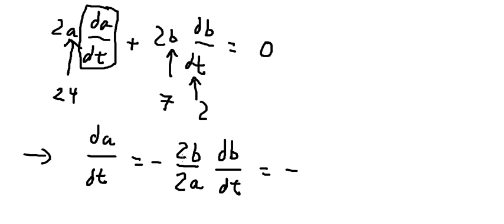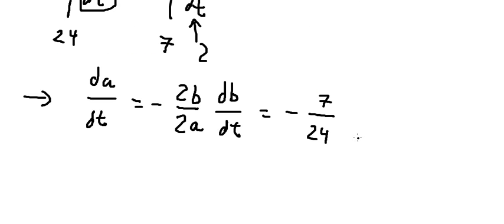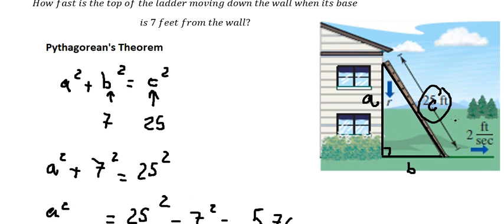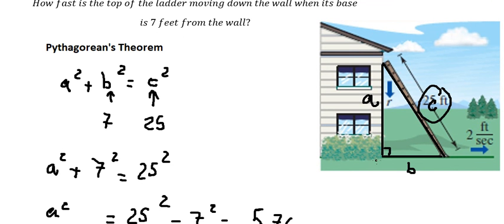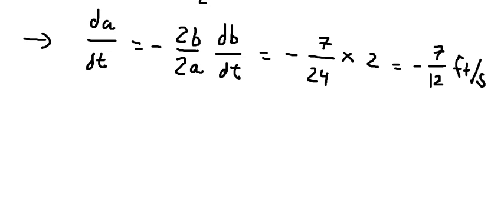So 2 cancels 2. B is 7, A is 24, dB/dt is 2. This equals negative 7 over 12 feet per second. That means the top goes down by 7/12 feet per second. This is the end.